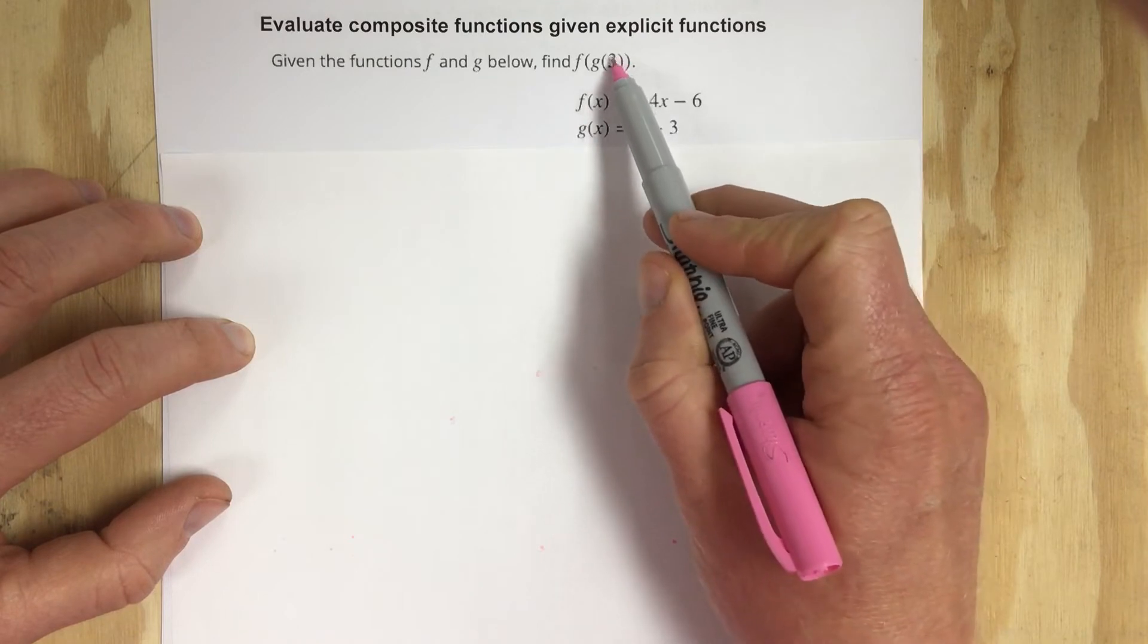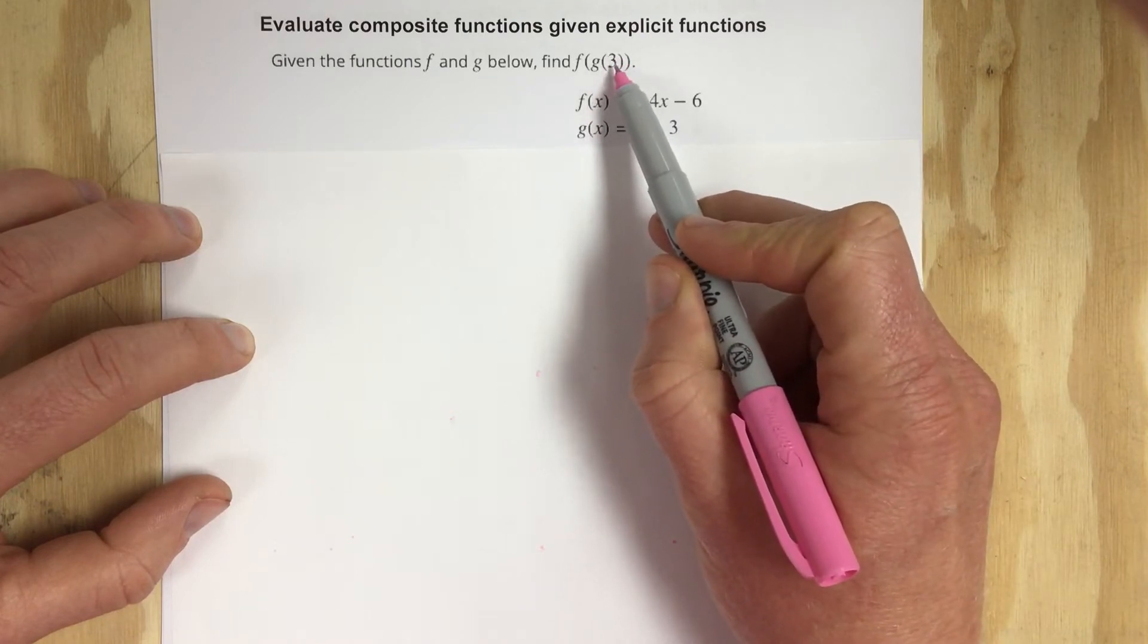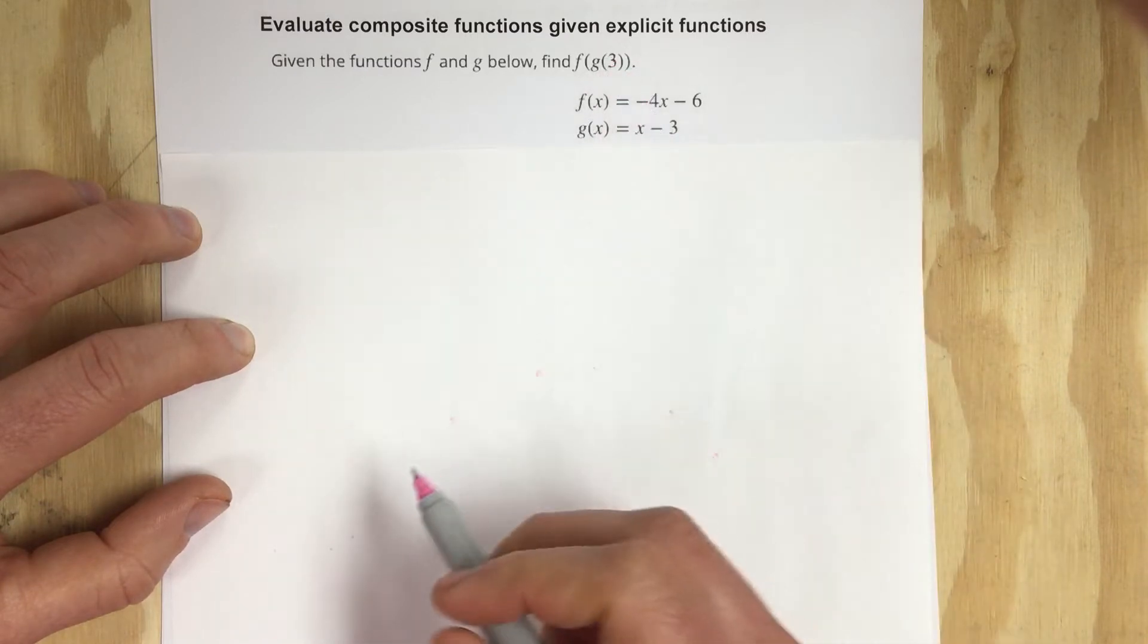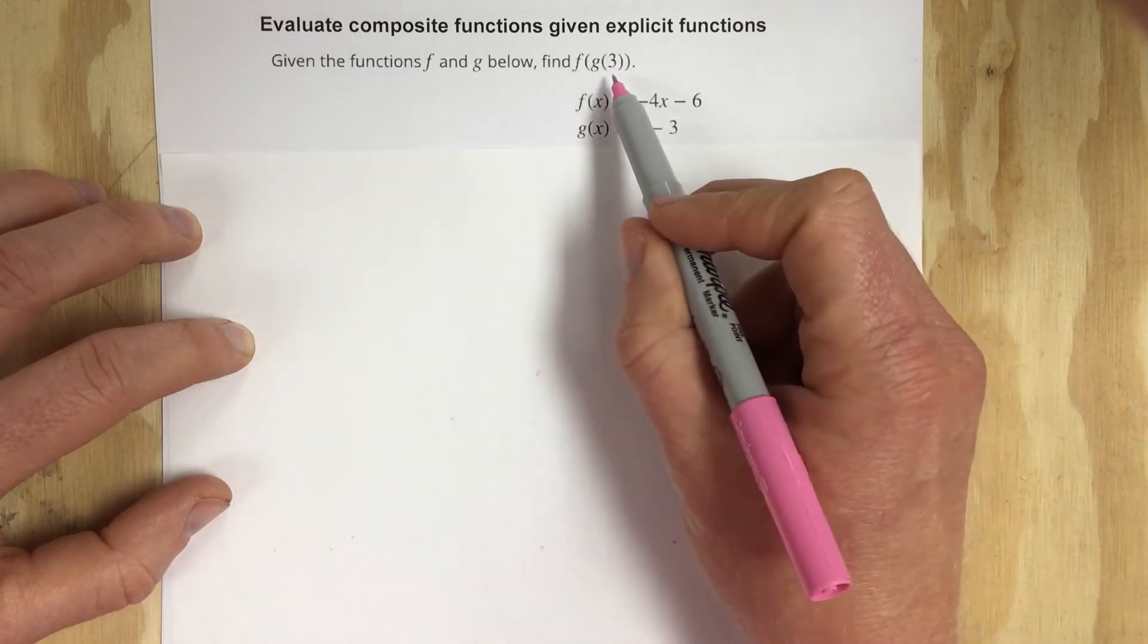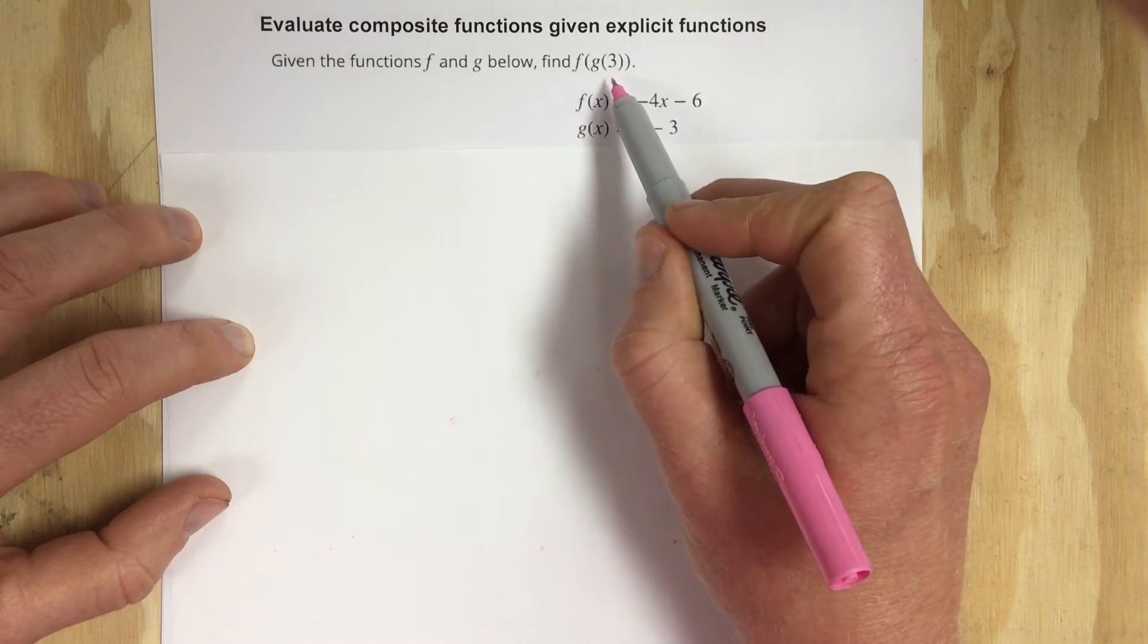What I like to do in these problems is ignore the 3 and replace that with x in the equation so I can get a general composition of functions equation at the end.